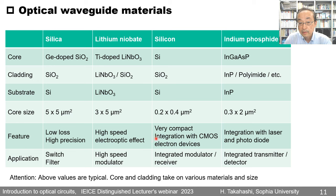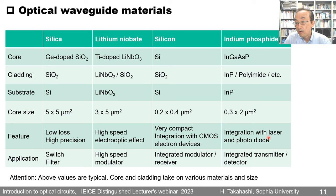Another feature of silicon waveguide is integration with CMOS electronic devices, enabling integrated modulators and integrated receivers. In the indium phosphide case, core size is 0.3×2 microns, with the feature of integration with lasers and photodiodes, since the laser and photodiode are made of the same material as the waveguide. The application is integrated transmitters and integrated detectors.